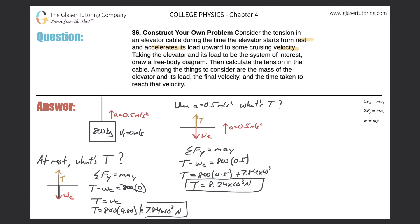The tension did go up, and that should make sense: if you're trying to accelerate the object upward, it's like pulling even harder on the elevator. The cable is pulling even harder, so the tension in that cable should increase. Now I can ask you about velocities, final velocities, times, and so on — it depends on how I frame the question.